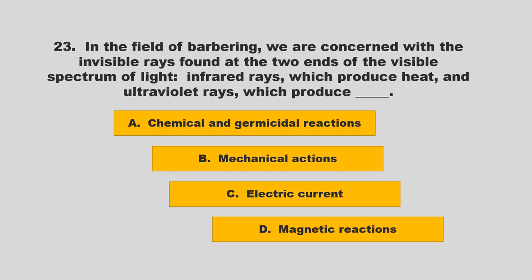In the field of barbering, we are concerned with the invisible rays found at the two ends of the visible spectrum of light — infrared rays, which produce heat, and ultraviolet rays, which produce blank. Is it chemical and germicidal reactions, mechanical actions, electric current, or magnetic reactions? If you chose A, chemical and germicidal reactions, you are correct.